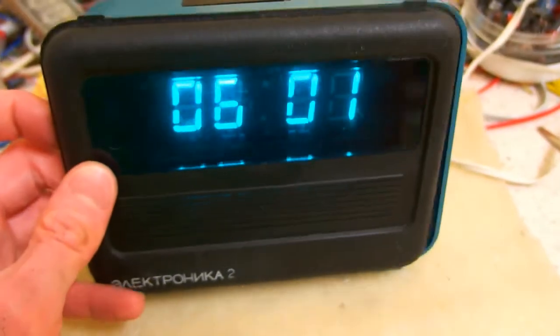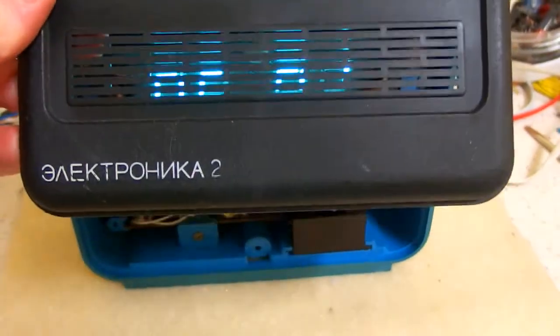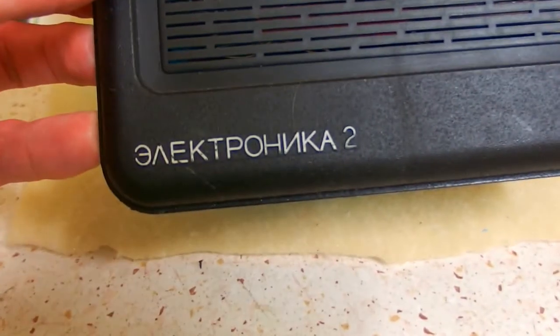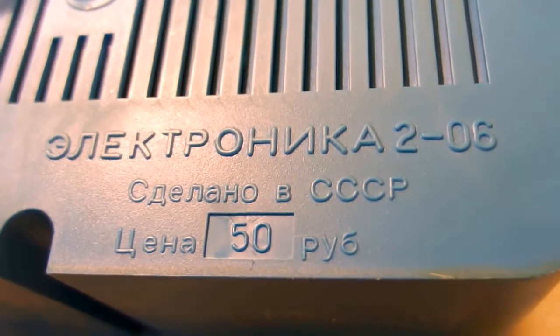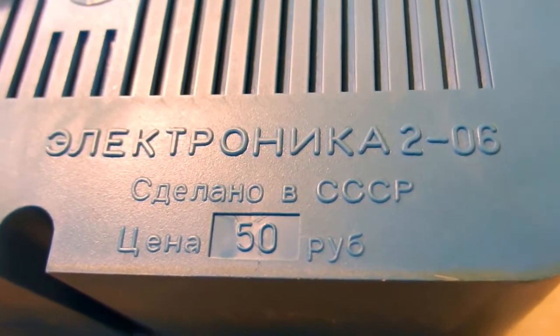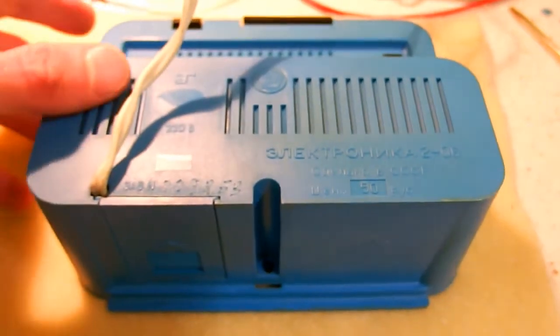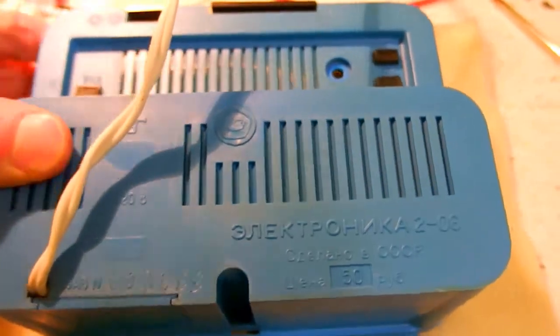And let's put the front cover on it. It's a really big scary clock with this ventilation grid. It's called Electronica 2 and the type marking is Electronica 2 06. It's made in the Soviet Union and the price was 50 rubles. So this is the big scary Soviet Cold War clock.